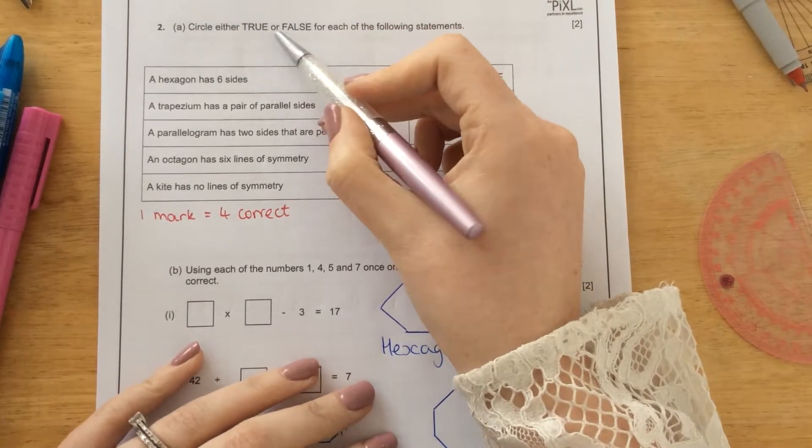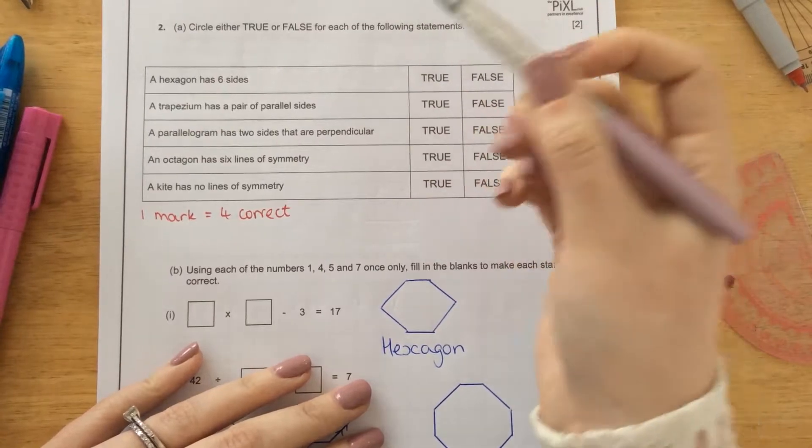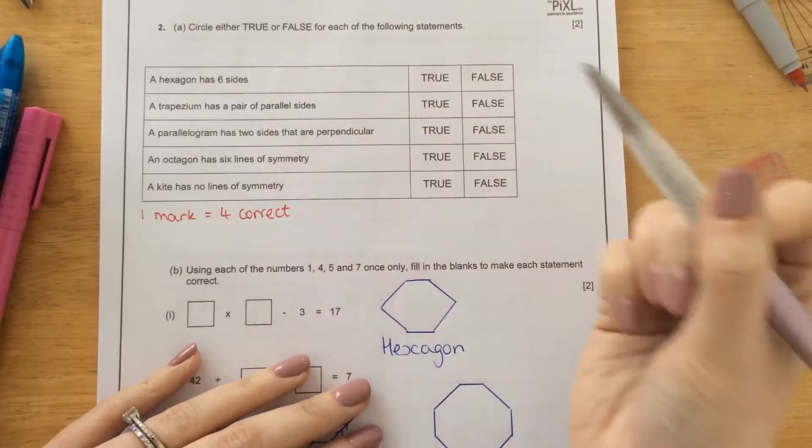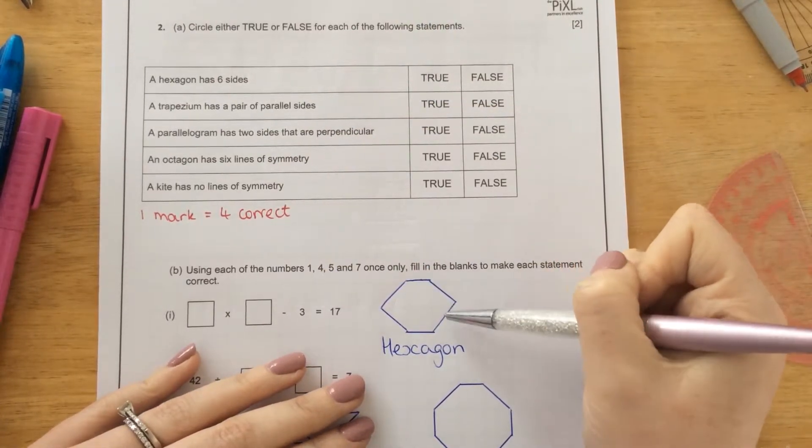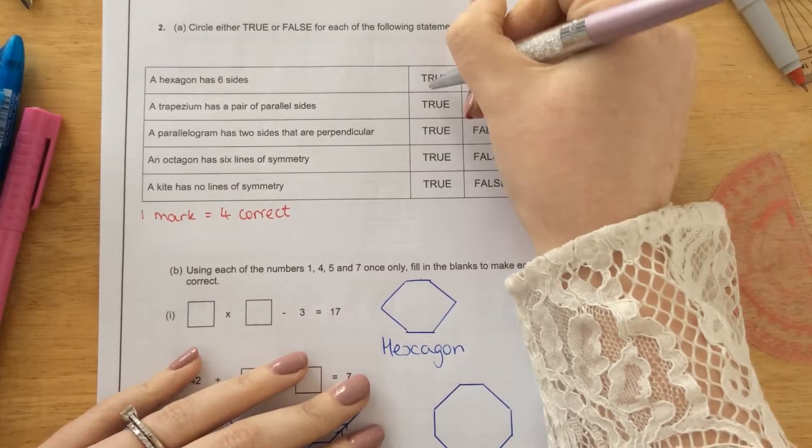Question 2. Circle either true or false for each of the following statements. A hexagon has six sides. This is a hexagon here with six sides. That is true.